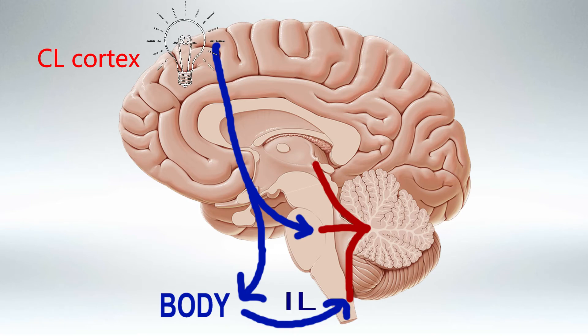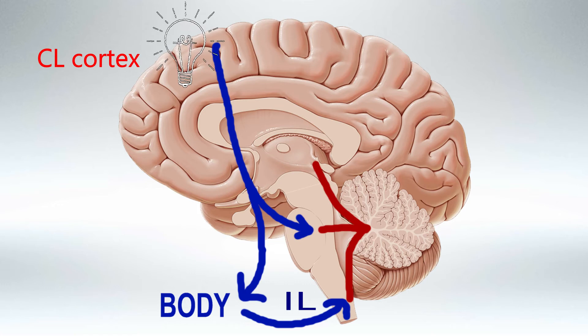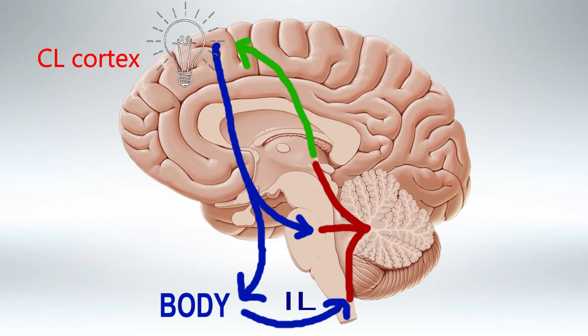The cerebellum will use the inferior peduncle to take signals from the ipsilateral side of the body to see how the movement was executed and compare it with the motor plan. Afterwards, if any modification is needed, it will use the superior peduncle to tell the contralateral cortex what to modify.